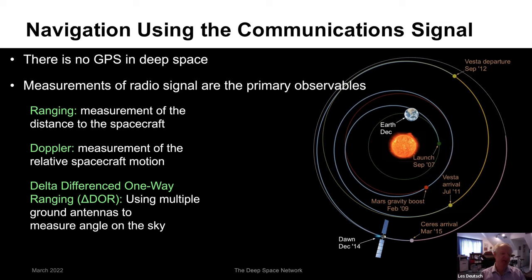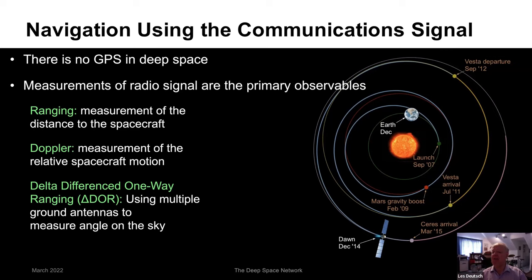Navigation is also supplemented by data from onboard spacecraft sensors. Cameras are often flown not just for science photography but for navigation itself — optical nav cameras look at an approaching asteroid against a stellar background to provide additional navigation information.